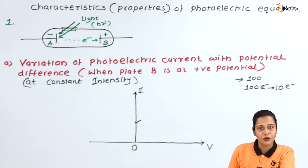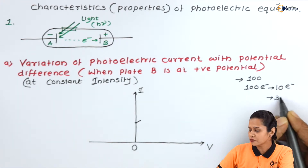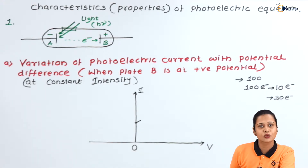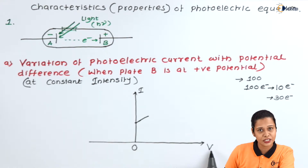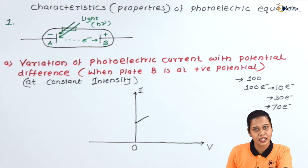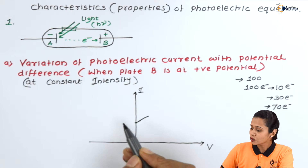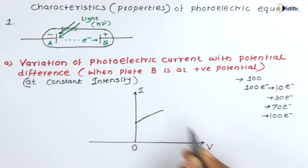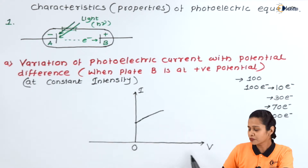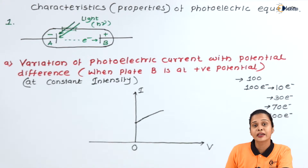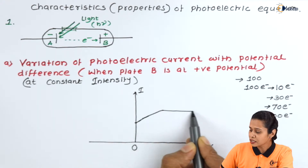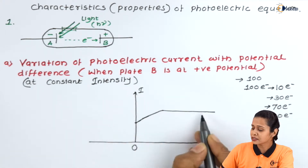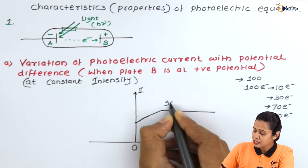As we further increase the potential of metal plate B, instead of 10 we have current due to 30 electrons, meaning more attraction towards plate B. Further increase gives current due to 70 electrons. In this way, current can increase up to 100 electrons. But after a certain point, even if we increase the positive potential of plate B, there is no further increase in current because there are no more electrons available. This current becomes constant and this value is called the saturated current.